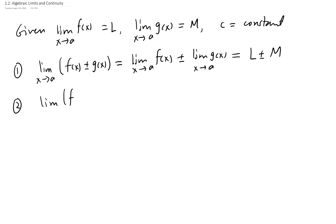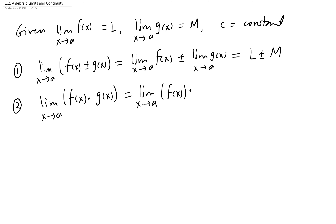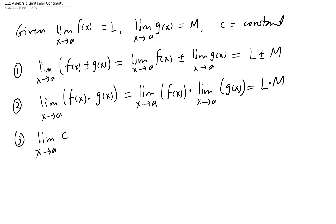The limit of the product is the product of the limits, which equals L times M. Also, the limit as x approaches a of a constant times a function — you can take the constant out in front of the limit of the function as x approaches a, giving c times L.